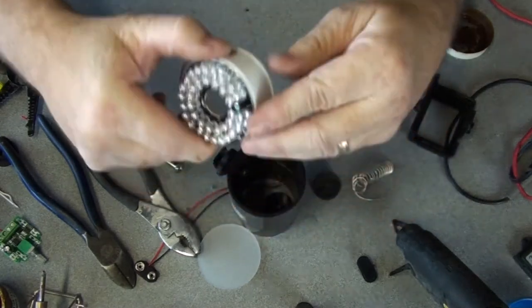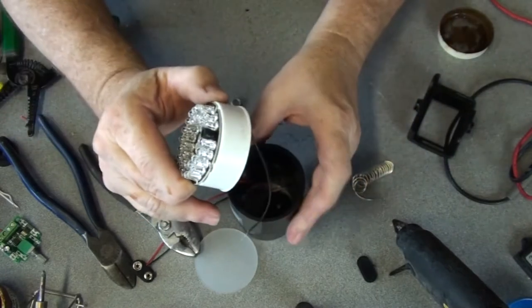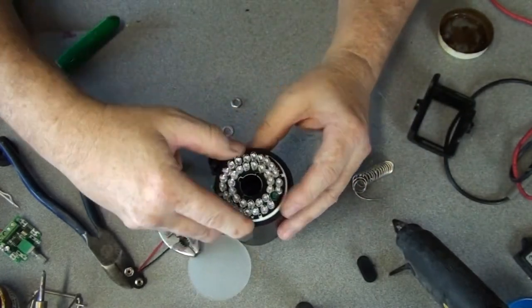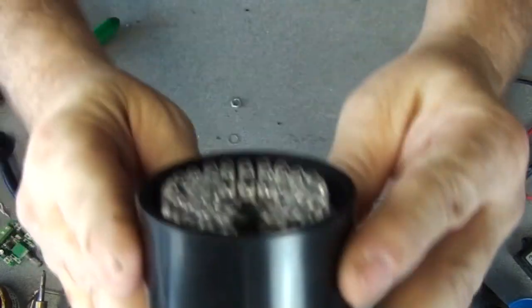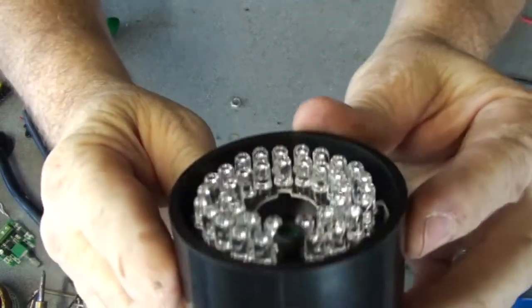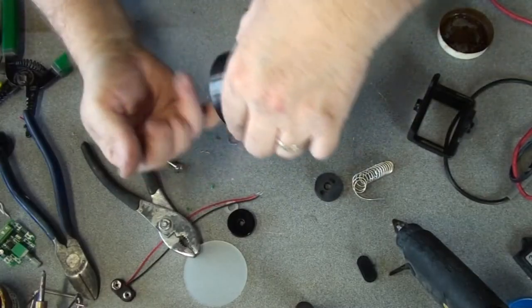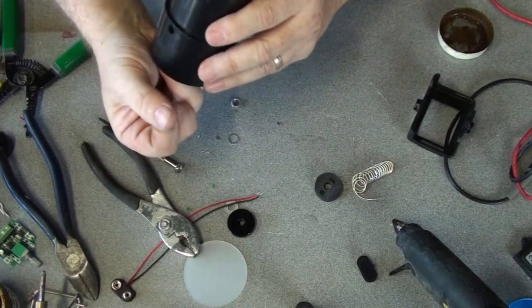And the wires fit in okay. So we want it to be flush. This is where we get the hot glue gun involved.